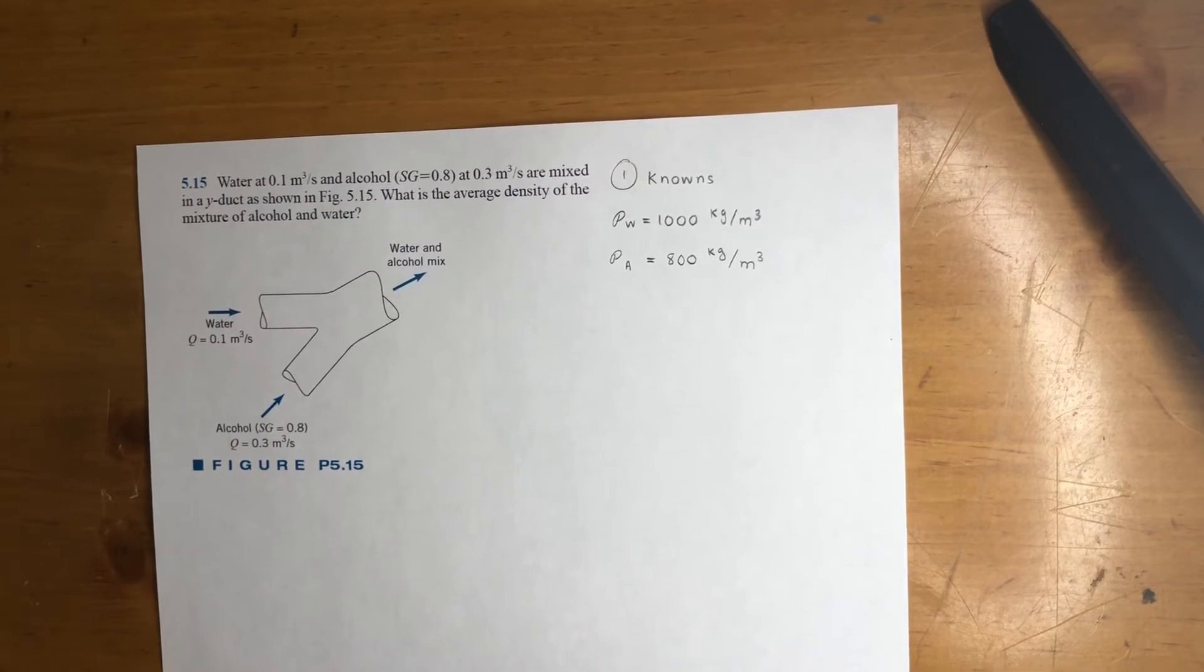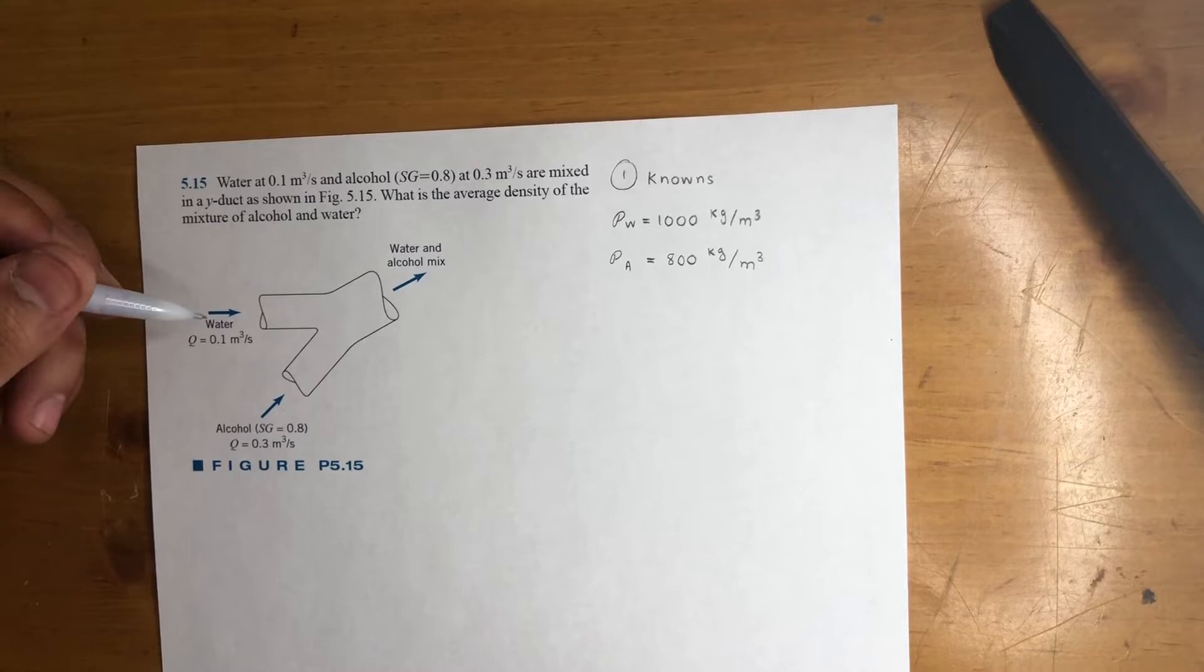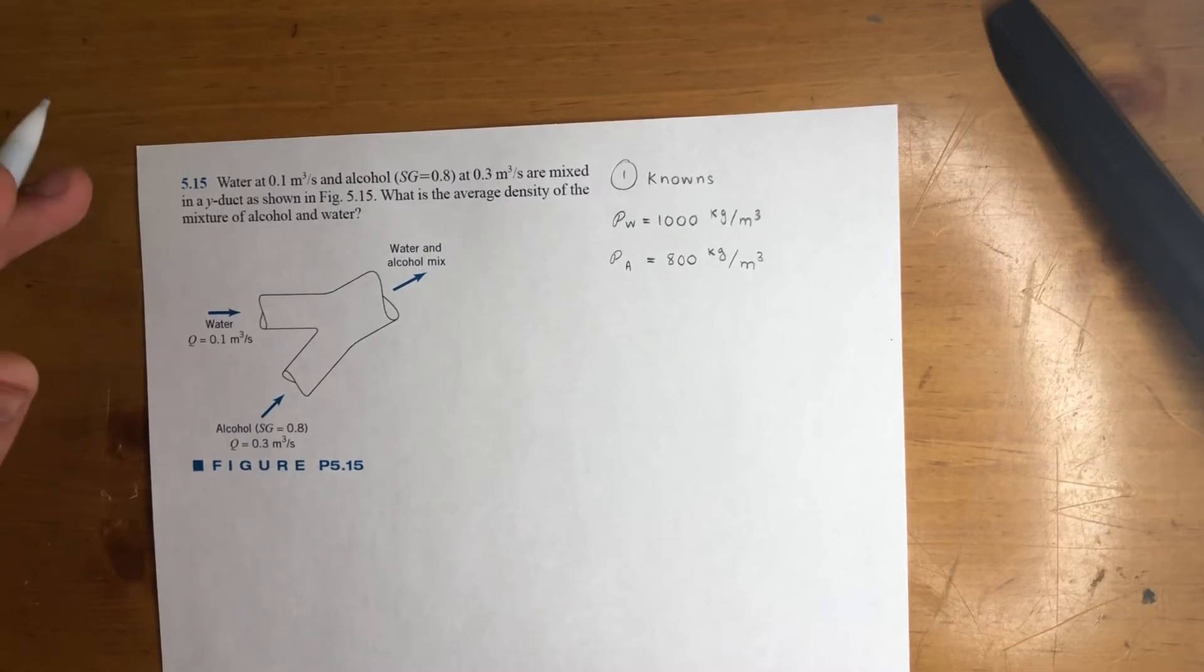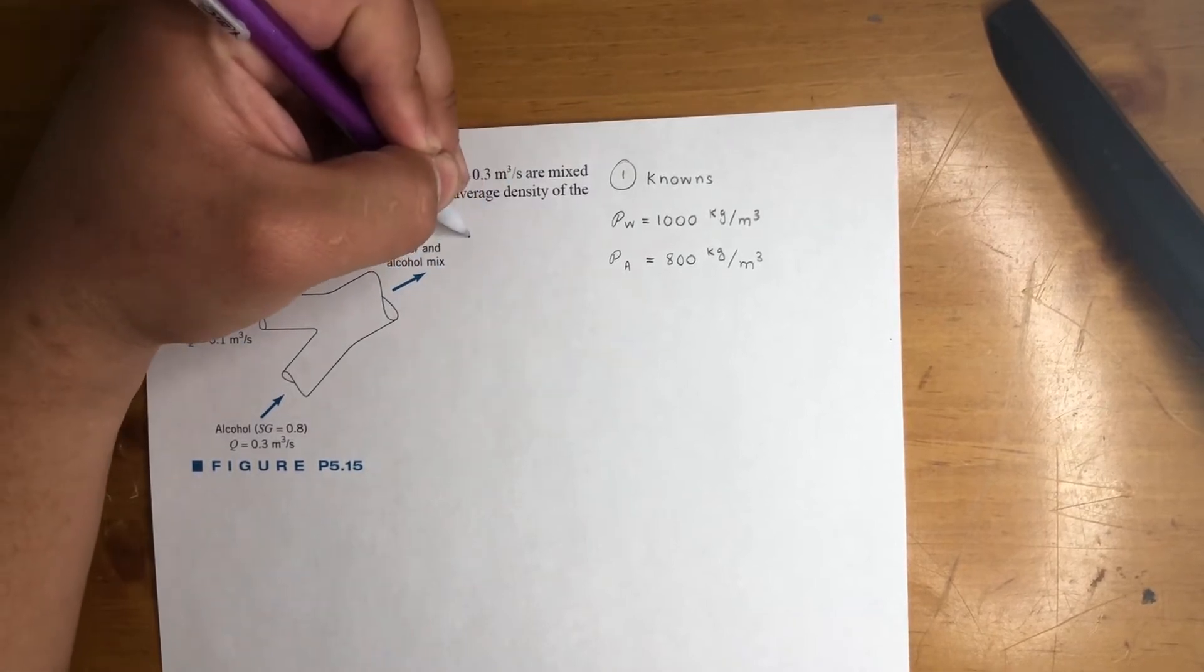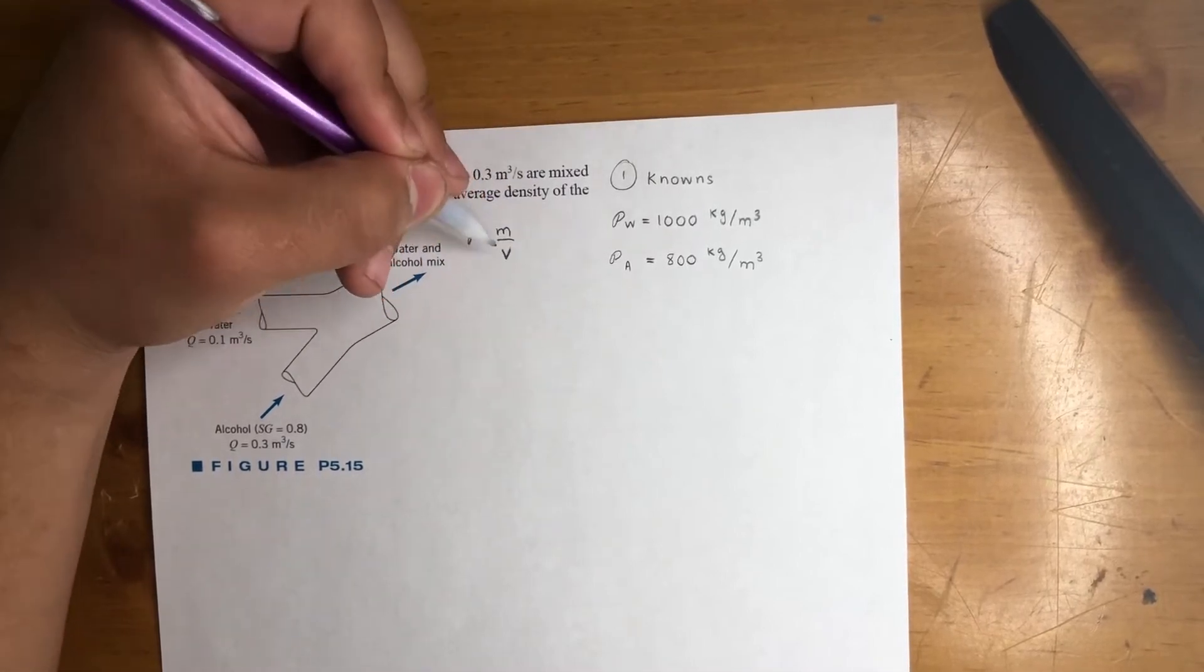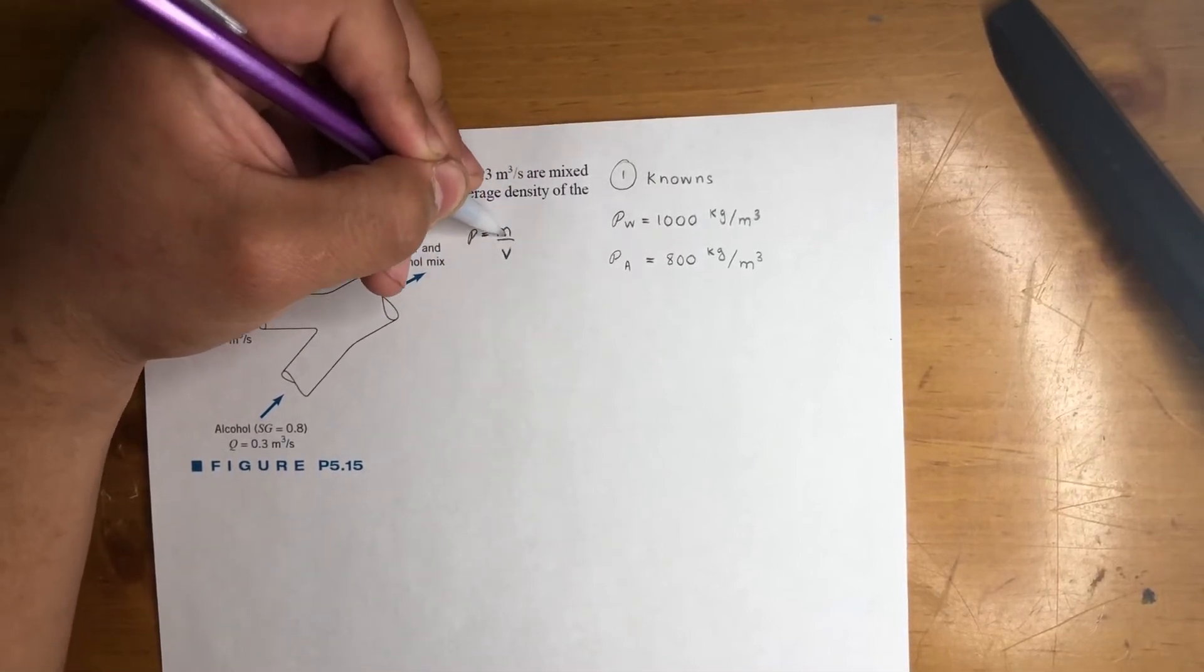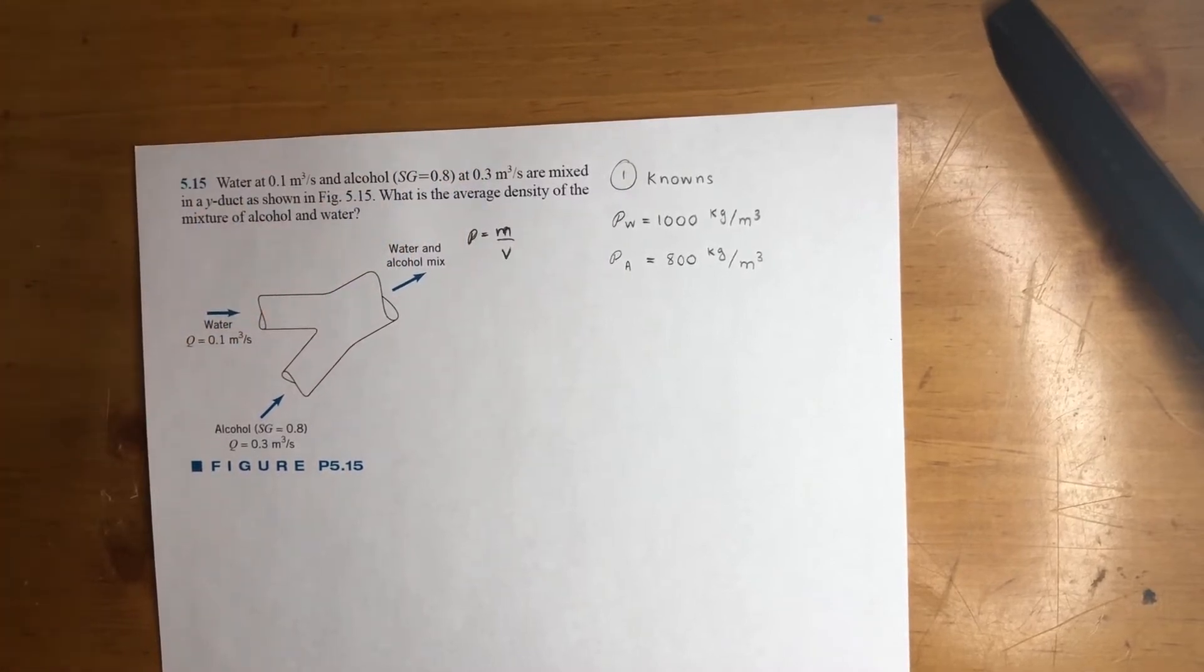Alright, so we also know the flow rates at these two points because of continuity. And just FYI, I'll let you know right now, this whole class you'll be dealing with incompressible fluids. So what that means is its volume is always constant. And we know density is equal to mass over volume. So if volume is constant and we're not adding or removing any mass, that means density is constant too.